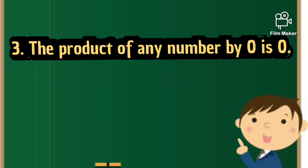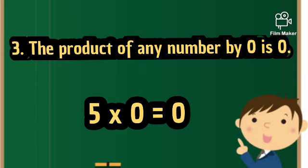The third property of multiplication is that the product of any number by zero is zero. This means that if we multiply any number by zero, we will get the answer zero. Here you can see the example 5 × 0 = 0.